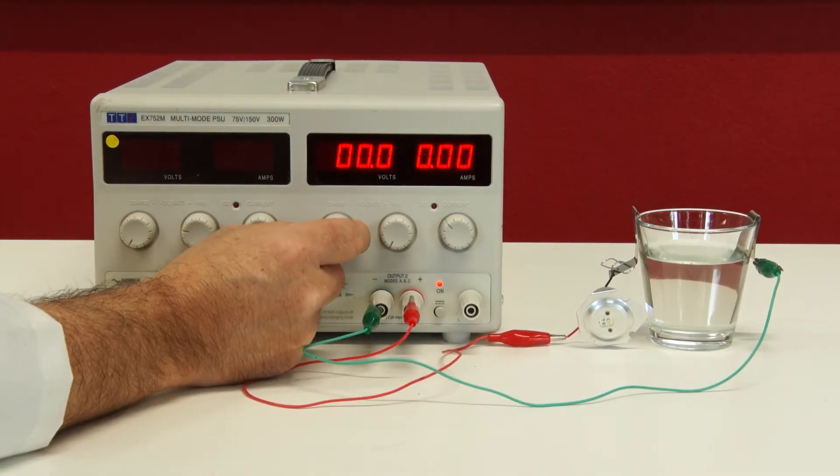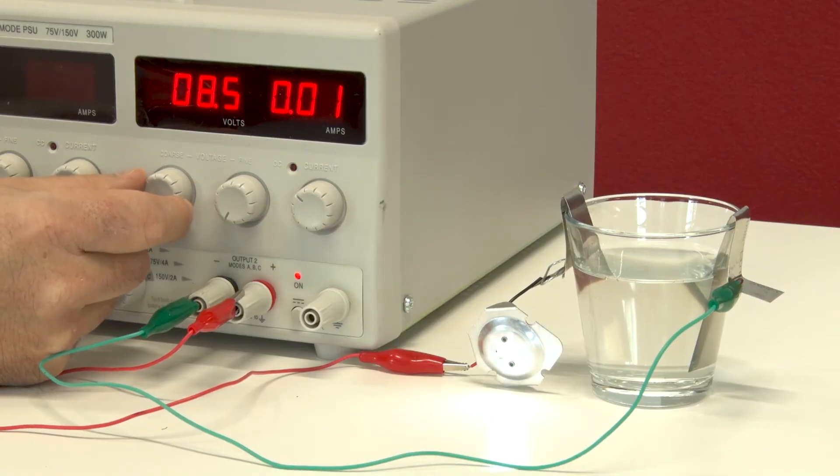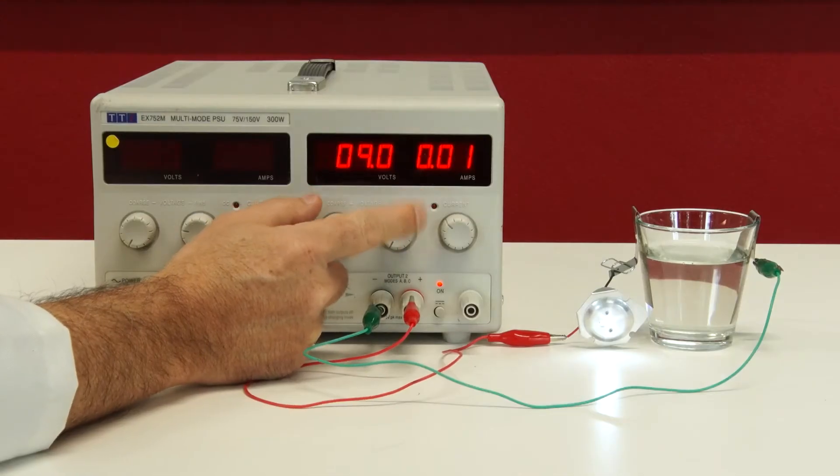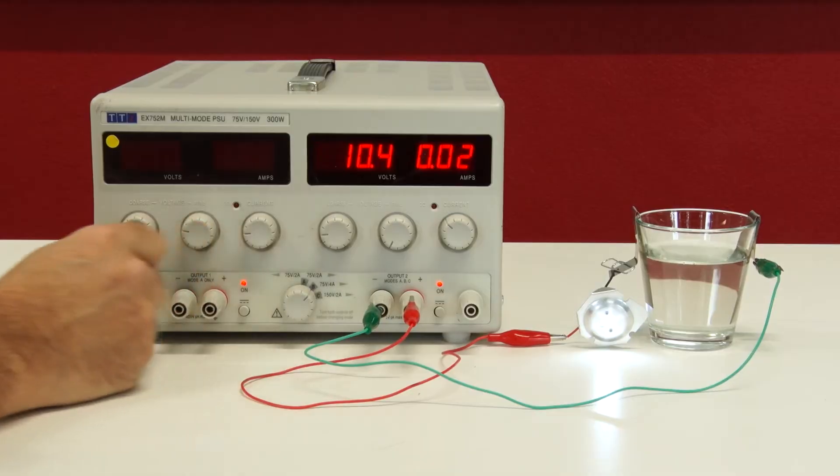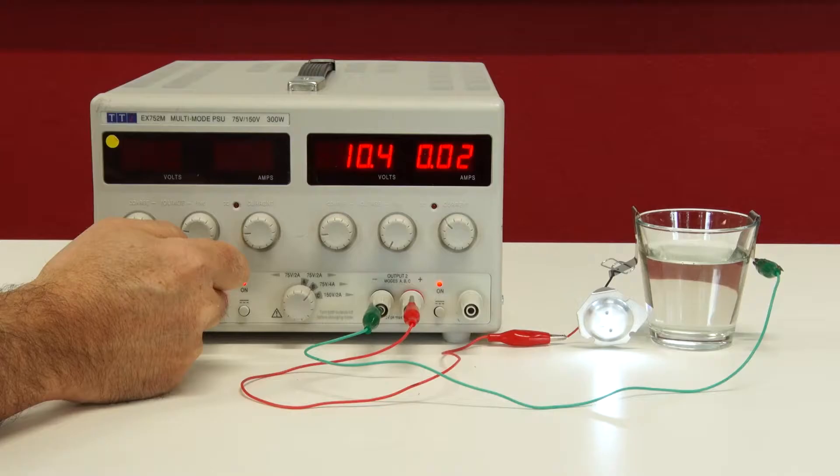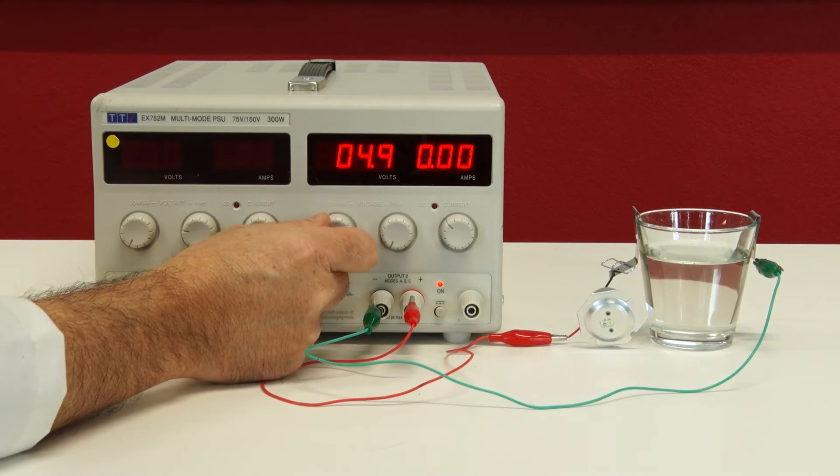I now turn up the voltage across the two electrodes. There's some conductance. You can see a little bit of current, maybe around 20 milliamps at 10 volts. And you can see from the LED that there's actually current flowing through this. So clearly, pond water is somewhat of a conductor.